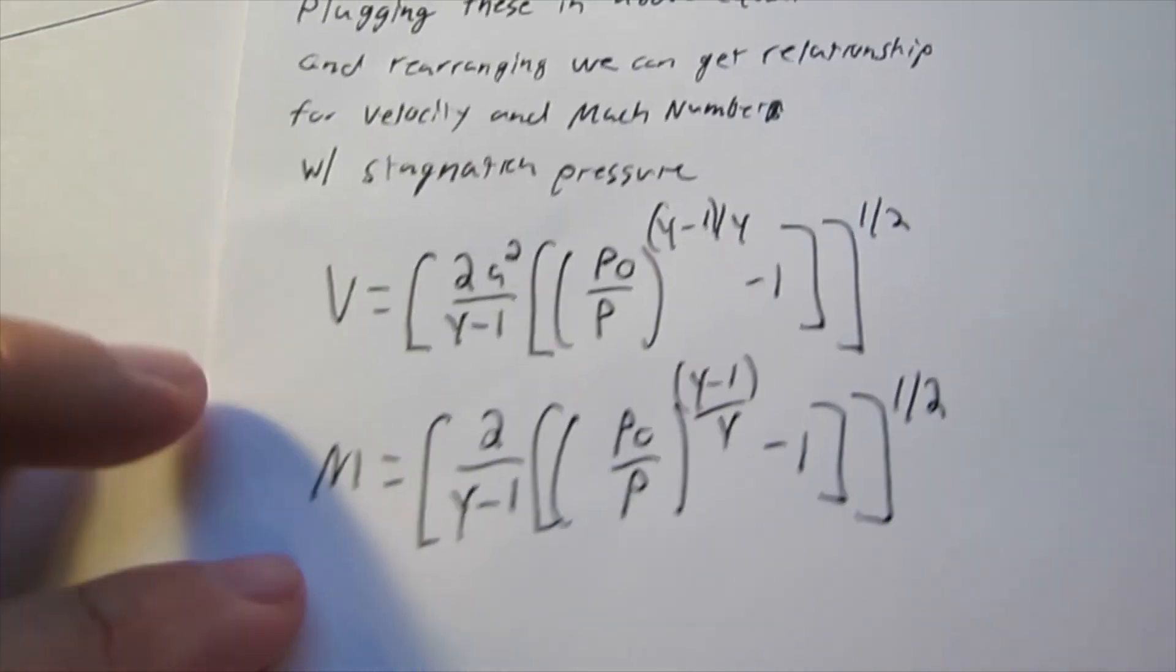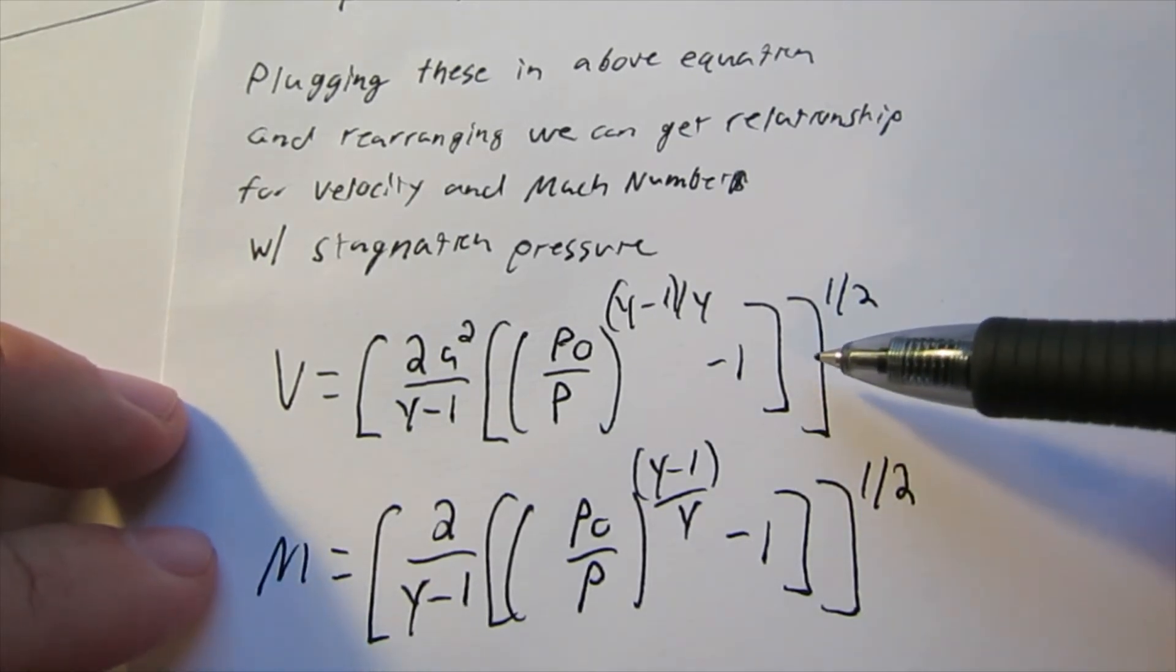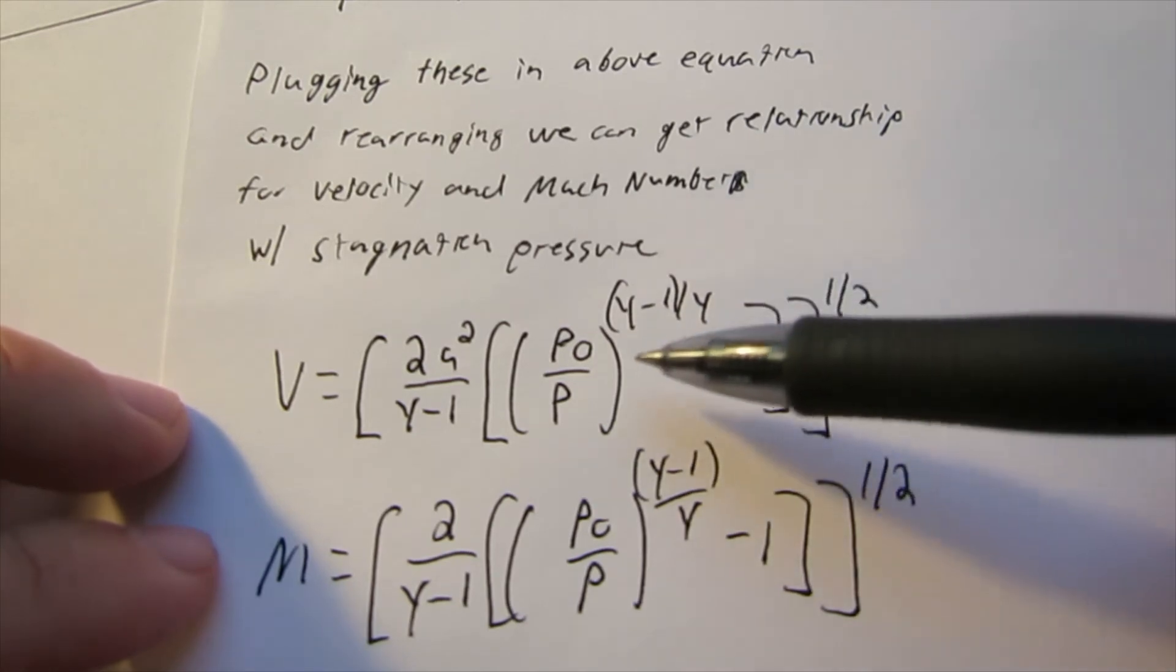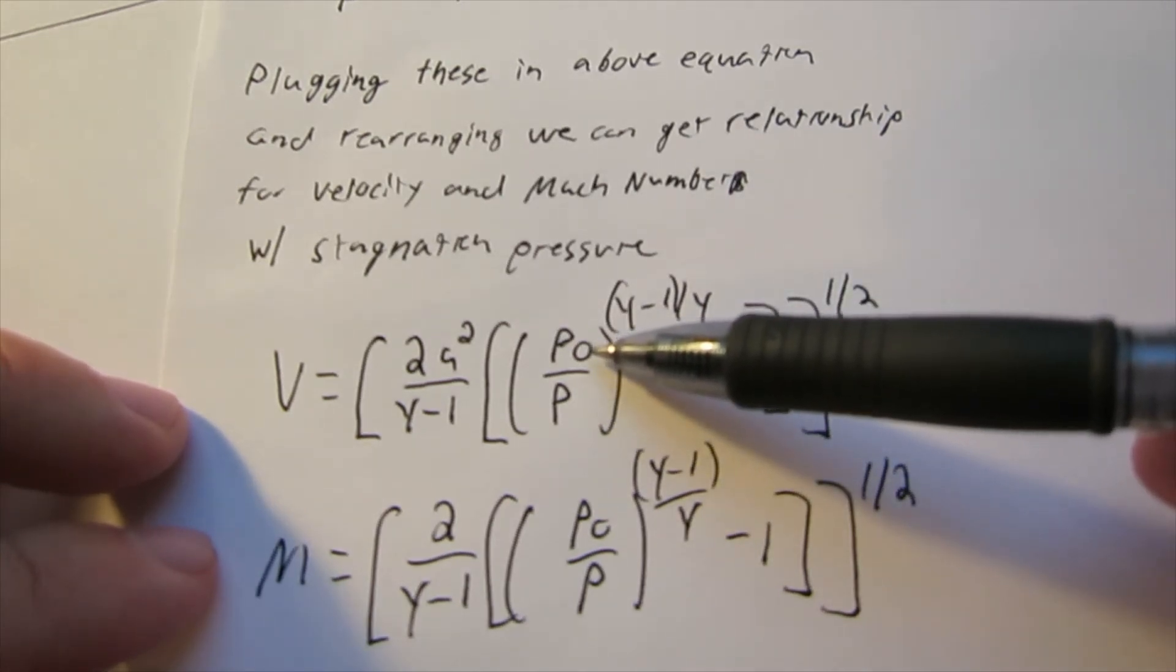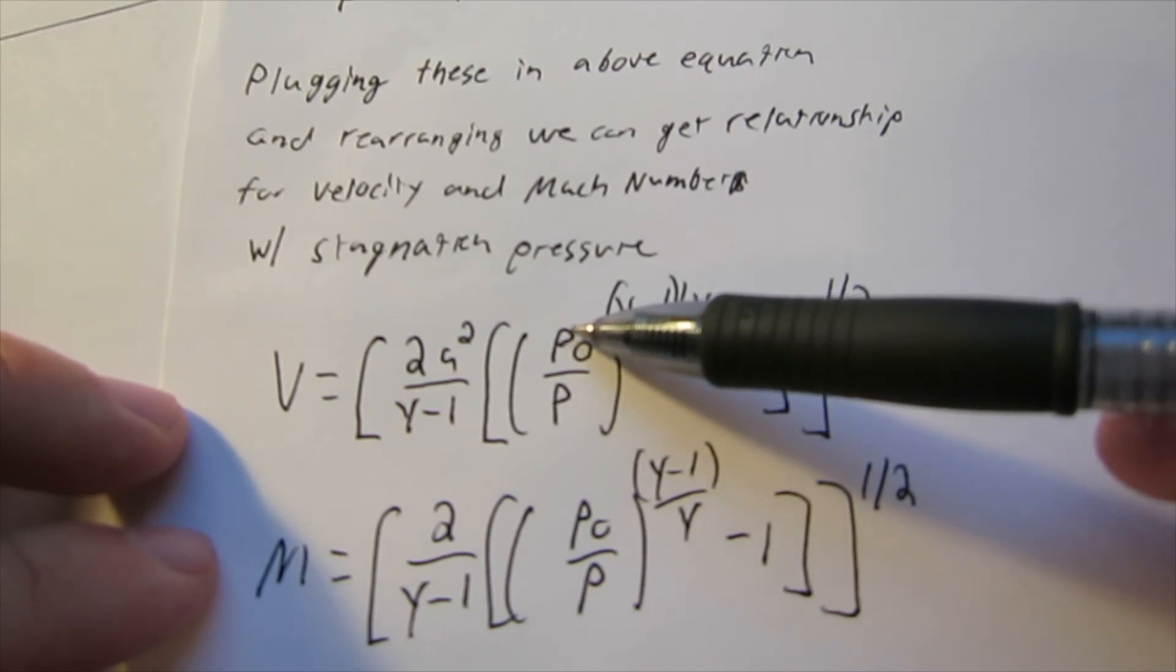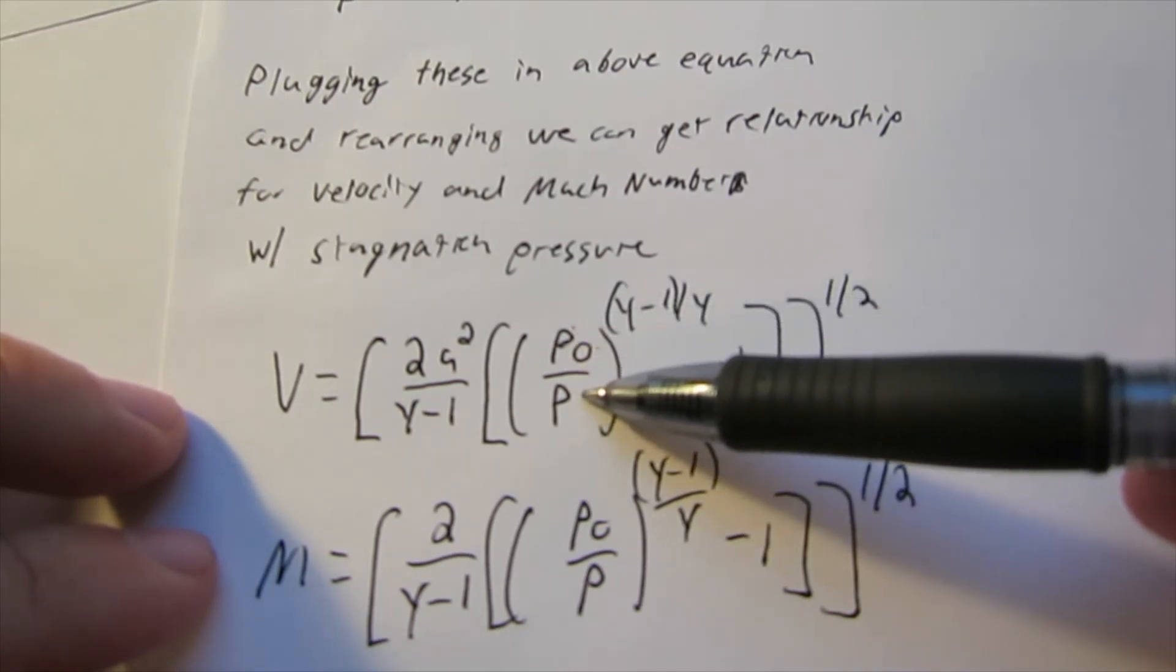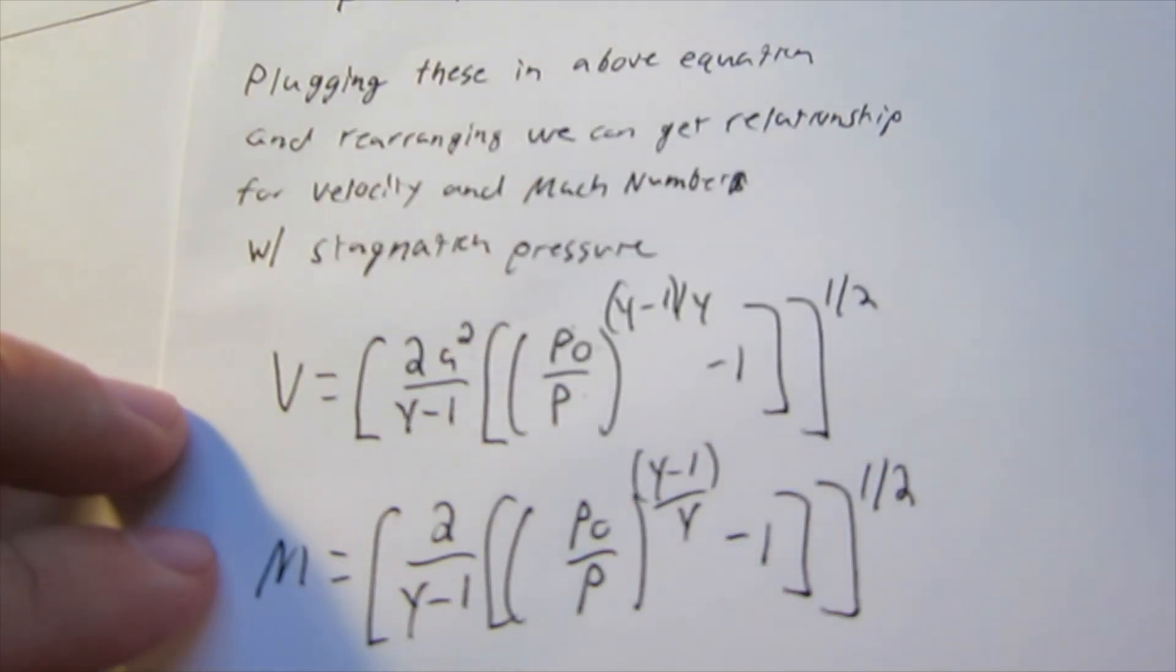So this is a powerful relationship here, because we can have sensors on our plane that can calculate, if this is a plane flying through the air, we can have sensors like pitot tubes that can give us the stagnation pressure, the ambient air pressure, and if we know the speed of sound, given our temperature.